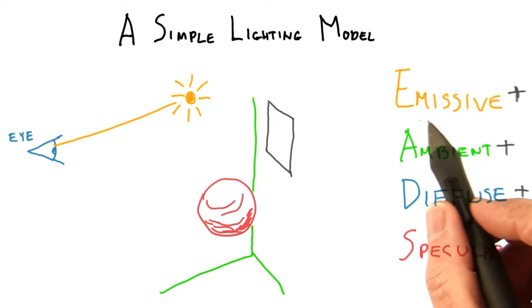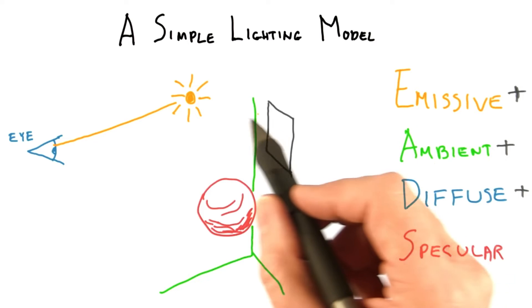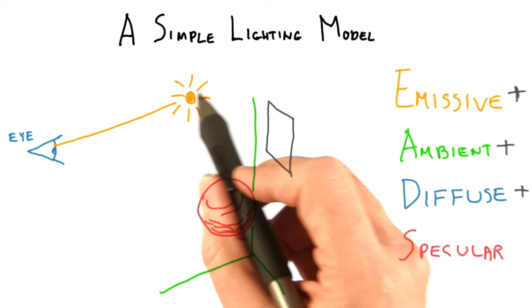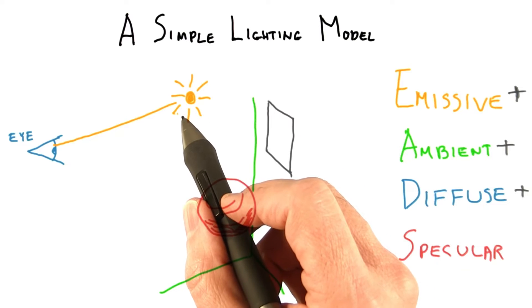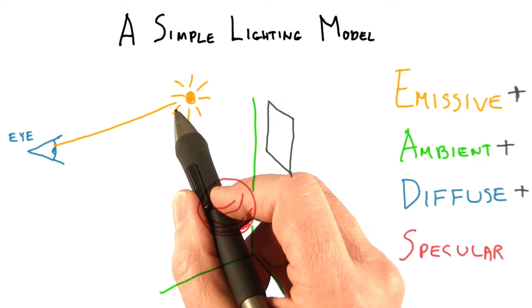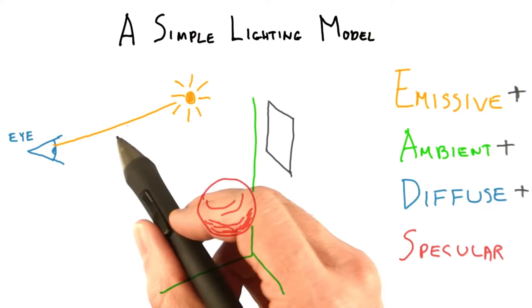The idea of the emissive term is that it's for coloring glowing objects. For example, a light bulb has its own color and other light sources don't really affect it. In reality, the emissive term is simply a way to add in some constant color, regardless of the lighting conditions.